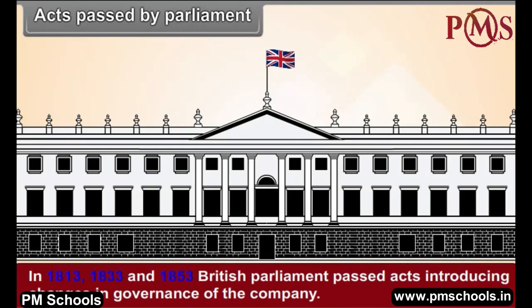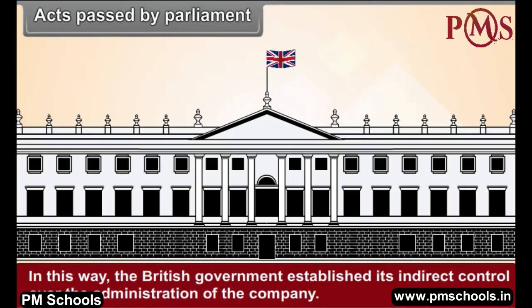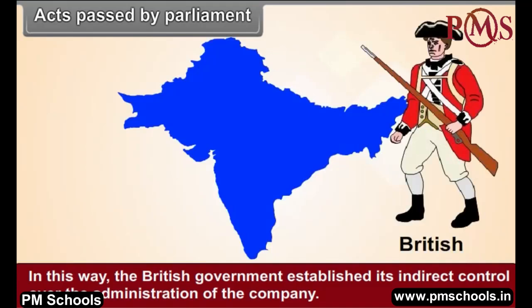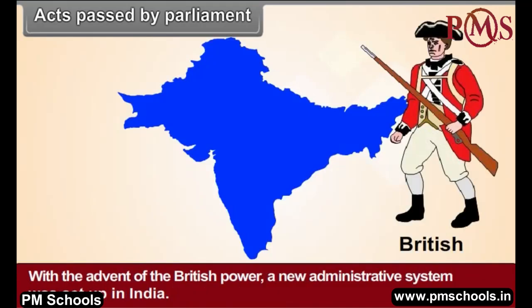With the advent of British power, a new administrative system was set up in India. The civil service, the military, the police force, and the judiciary were the main pillars of the British administration in India.